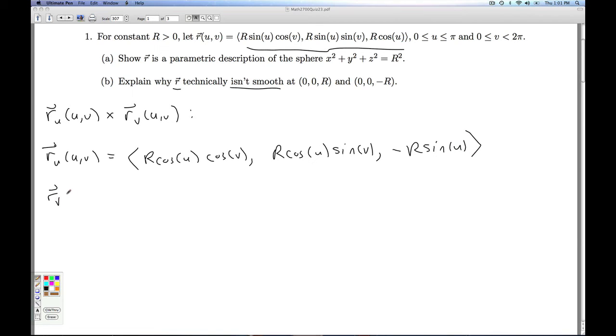And similarly here for rv, I take the derivative of each component with respect to v. So I'm going to have negative r sine u sine v, r sine u cosine v. And there's no v's here, so that derivative is 0.